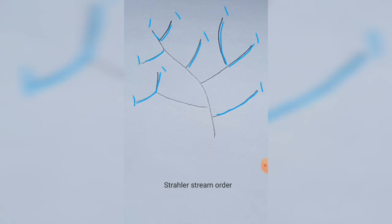But if two tributaries join that have different numbers, you always take the higher one, so it doesn't go up a level. So for example, here where one and one join, this then becomes a two. Here one and one join, so it becomes a two. And you just continue that.